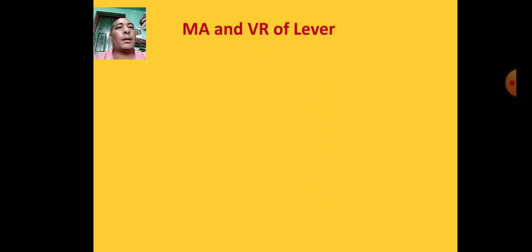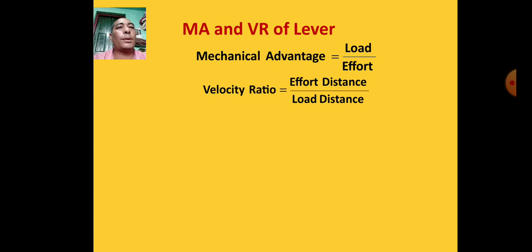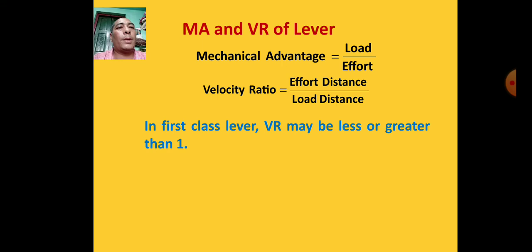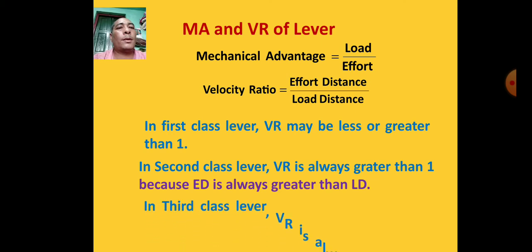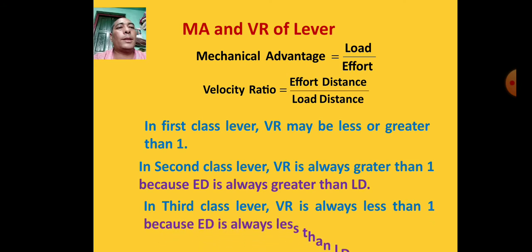For a lever, mechanical advantage equals load upon effort, and velocity ratio equals effort distance upon load distance. In first class lever, VR may be less or greater than one. In second class lever, VR is always greater than one because effort distance is always greater than load distance. In third class lever, VR is always less than one because effort distance is always less than load distance.